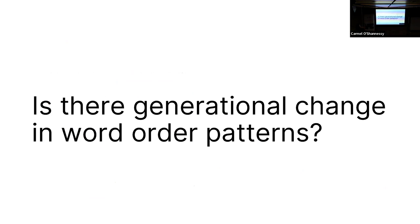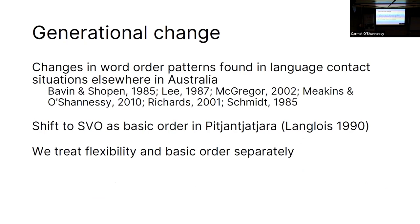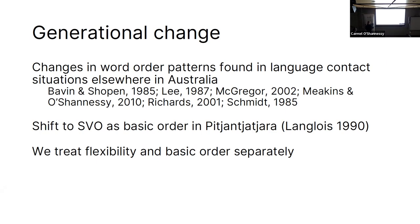The second question is: is there any generational change in word order patterns, moving towards more English-like patterns due to language contact? These sorts of changes have been found in language contact situations elsewhere in Australia, both in terms of changes to the fundamental structure of the language and how grammatical relations are established. However, there's nothing like that going on here — the case marking system is basically unchanged. As mentioned, Lenoir found a shift to SVO as the basic word order. The other difference between English and Pitjantjatjara is also about rigidity versus flexibility, so we're looking at these two things separately.